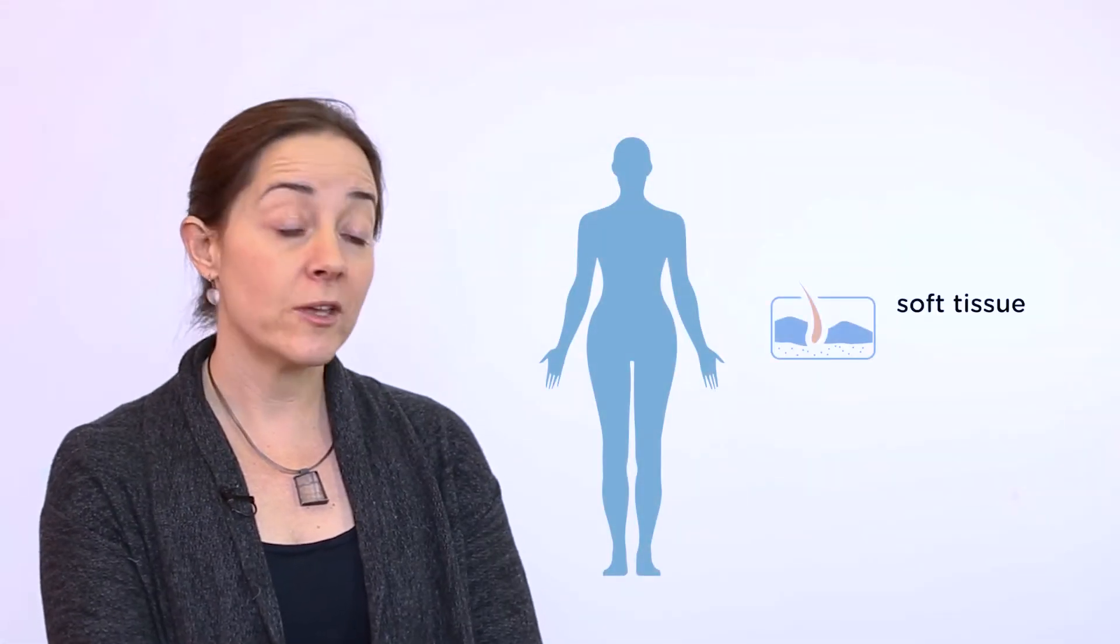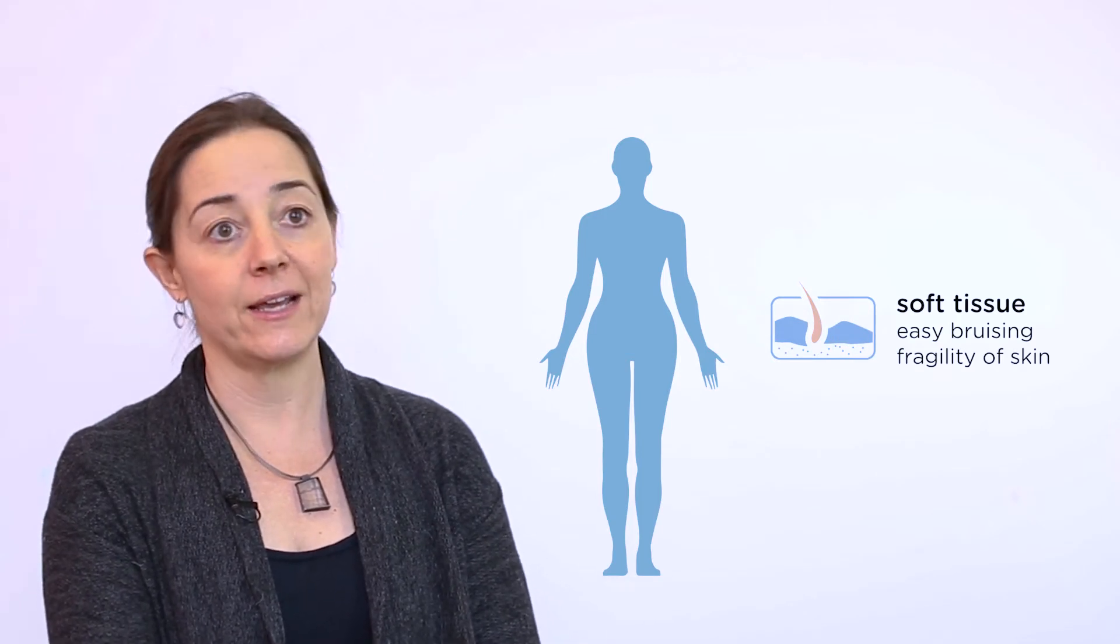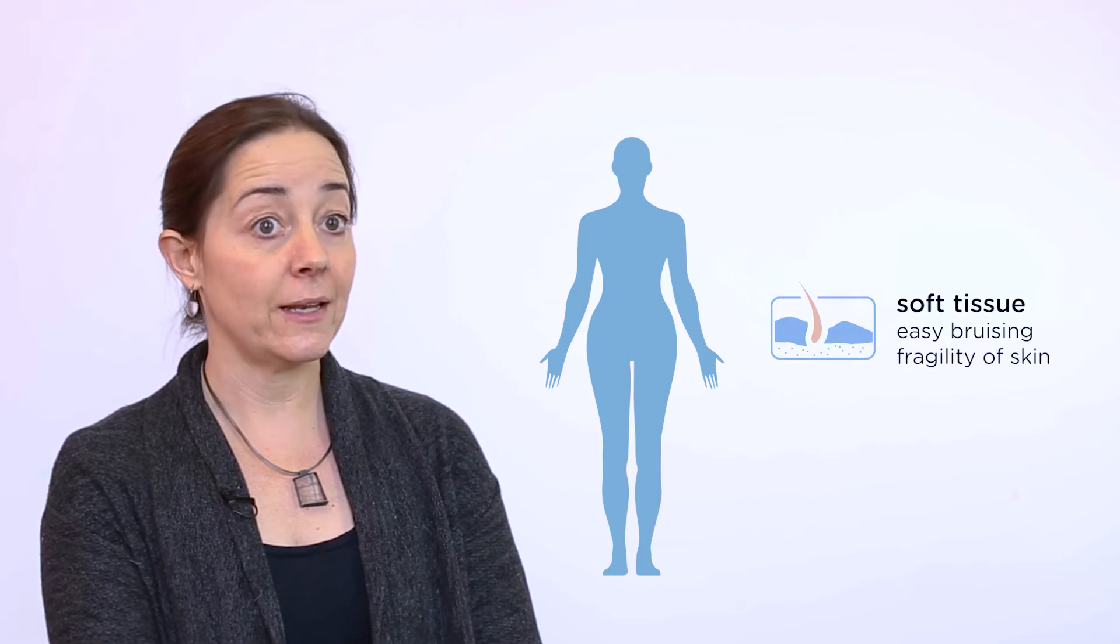Amyloidosis can deposit anywhere in the body. The only place where it doesn't cause disease is within the brain. It can affect the soft tissues, which is where you tend to notice easy bruising, fragility of the skin, so bruising particularly around the eyes, in the beard line in men.